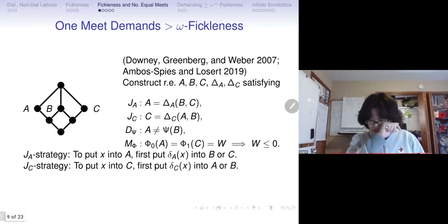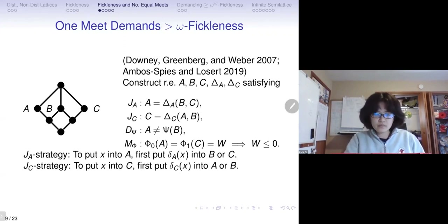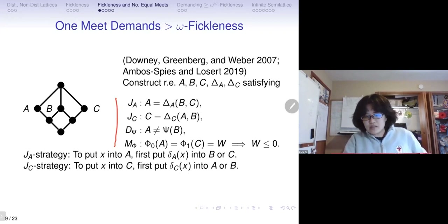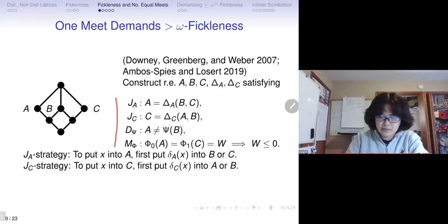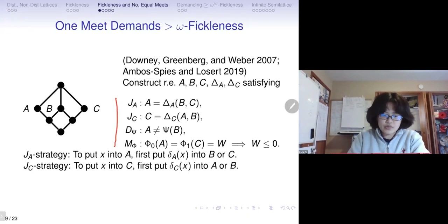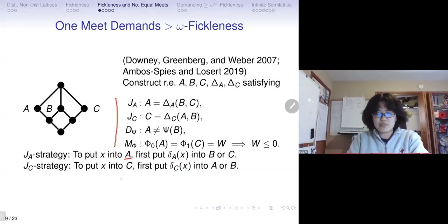Let's look at the main idea behind bounding an L7 lattice, or critical triple structure. The troublesome requirements are: a join requirement J-A saying A is computable by B and C; a join requirement J-C saying C is computable by A and B; a diagonalization requirement D saying A is not computable by B; and a meet requirement M saying A and C form a minimal pair. The J-A strategy says: if I want to put something into A, I put something small into B or C. J-C says: if I want to put something into C, I put something small into A or B.